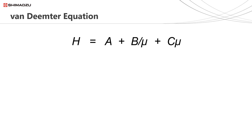This is where the Van Deemter equation comes in. Shown here is the simplified version of the Van Deemter equation for plate height, which explains the sources for band broadening and efficiency loss during a separation. Plate height H is equal to the contribution from three terms: the A term, the B term, and the C term. If we can keep the contribution of each of these terms to band broadening to a minimum, then plate height remains low and plate number — and therefore efficiency — high.